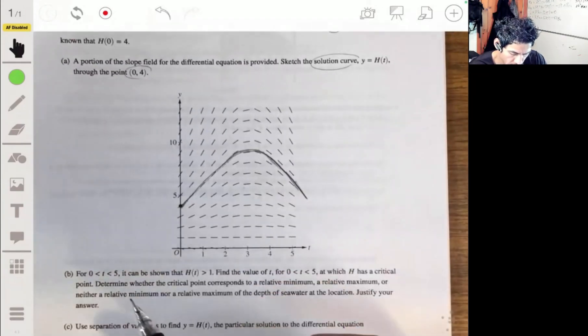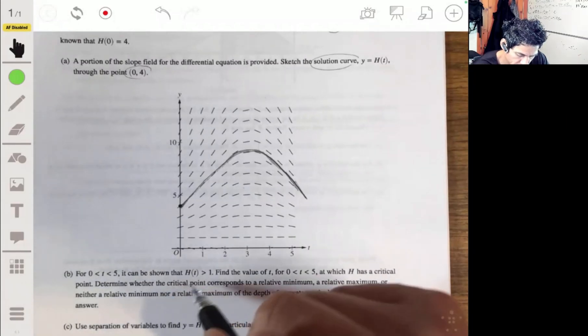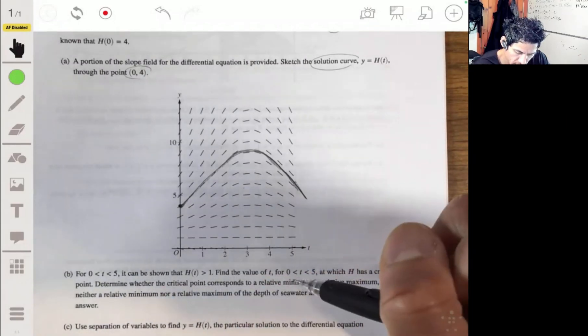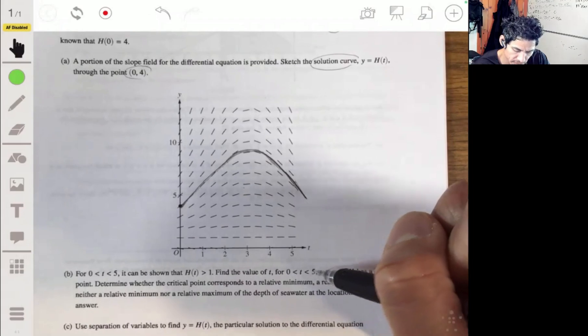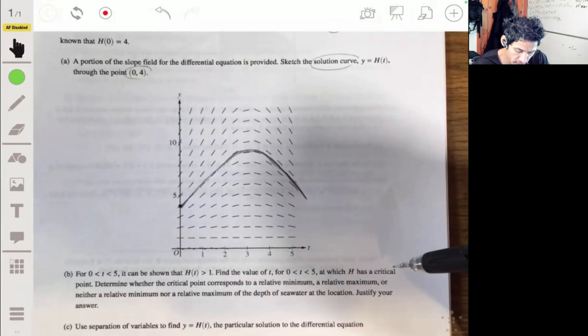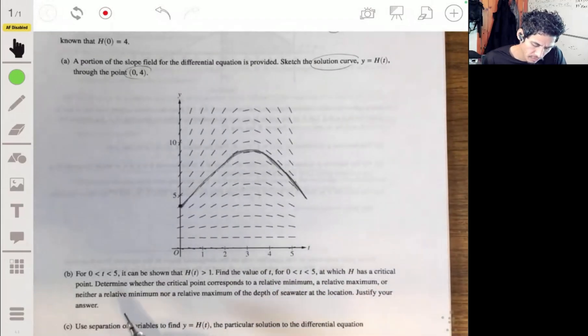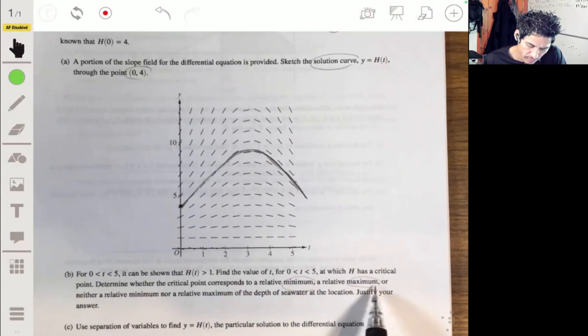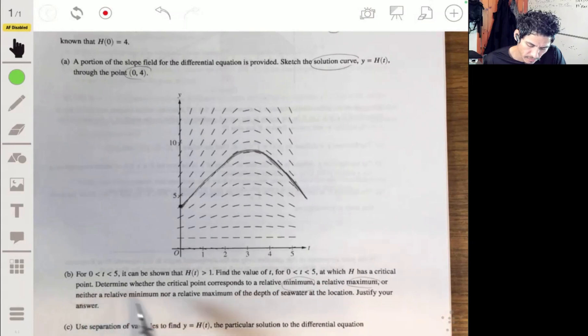Part B for t between 0 and 5, it can be shown that h of t is greater than 1. So find the value of t for t between 0 and 5 at which h has a critical value or h has a critical point. Critical value, same sort of thing. Determine whether the critical point corresponds to a relative minimum or a relative maximum or neither. Justify your answer.